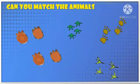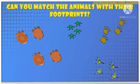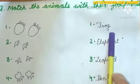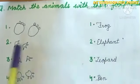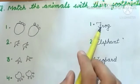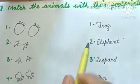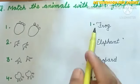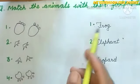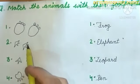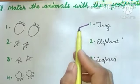Can you match the animals with their footprints? Now, let's match the animals with their footprints. First, we have Frog. Can you guess which footprint is a frog? Yes, this one. So, match this.